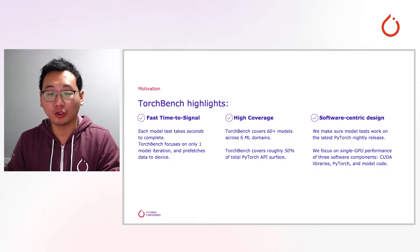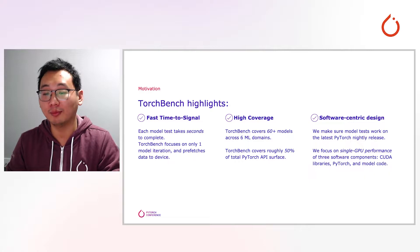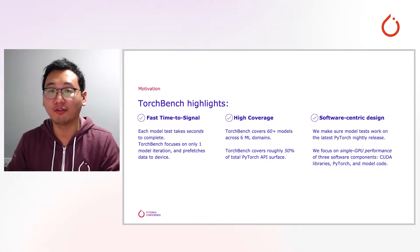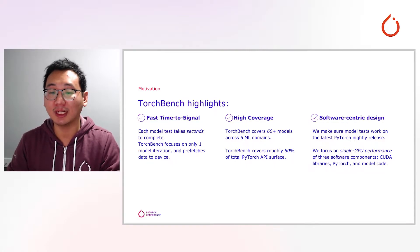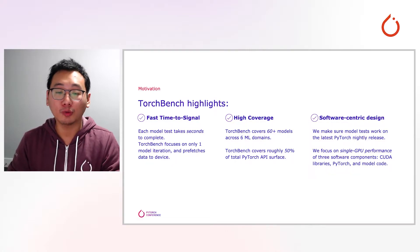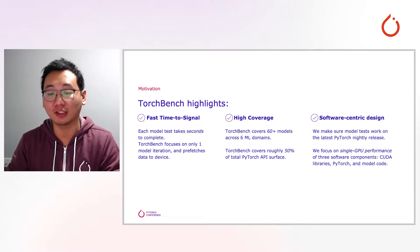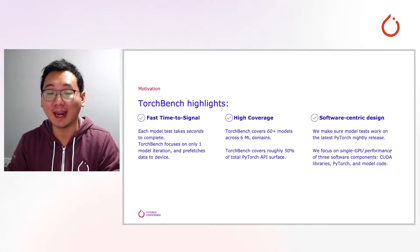Second, TorchBench features more than 60 open-source deep learning models, including all mainstream machine learning fields, such as NLP, computer vision, reinforcement learning, recommendation, image detection, and generation. Code-wise, TorchBench covers approximately 50% of overall PyTorch API usage, always from real-world use cases, and we are working to push this even higher.